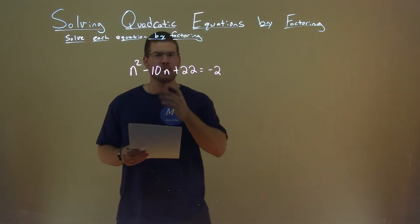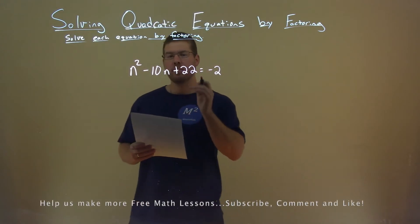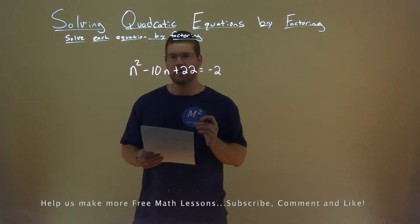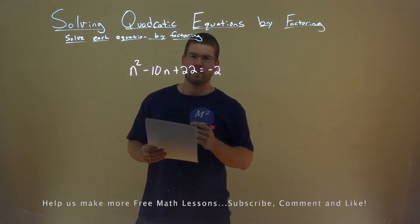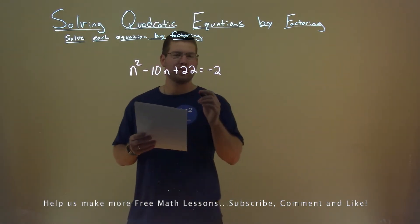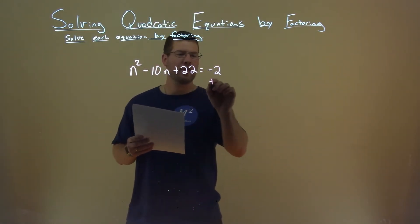We're given our problem right here, n squared minus 10n plus 22 equals negative 2. We want to solve this by factoring. First thing I want to do here is I want to get this equal to 0, so I have to add a 2 to both sides.